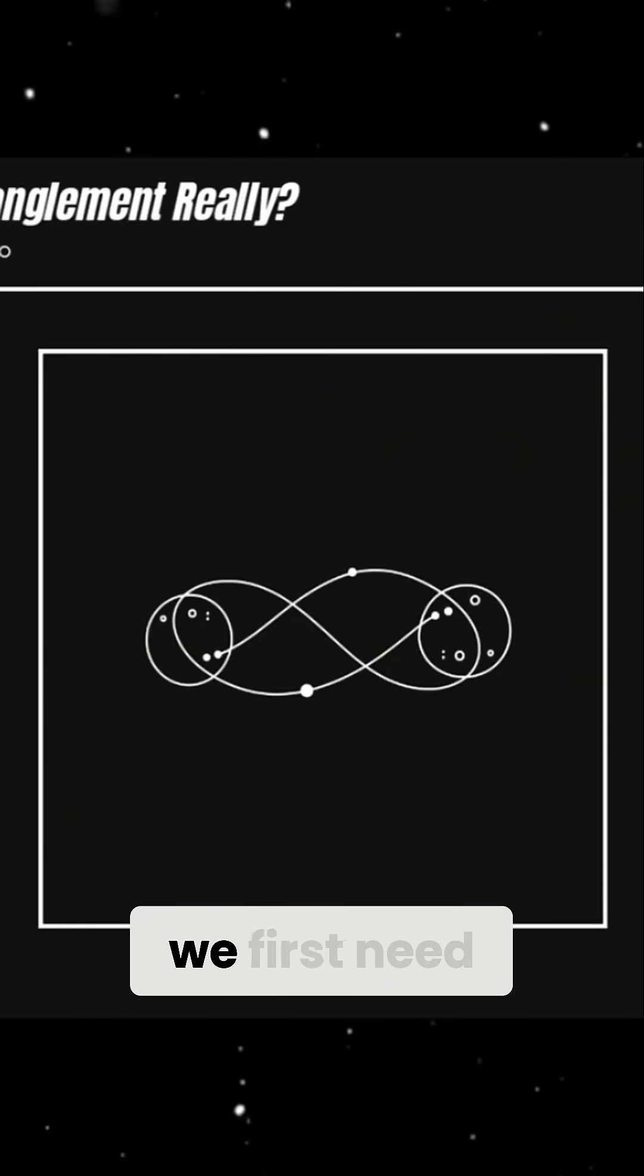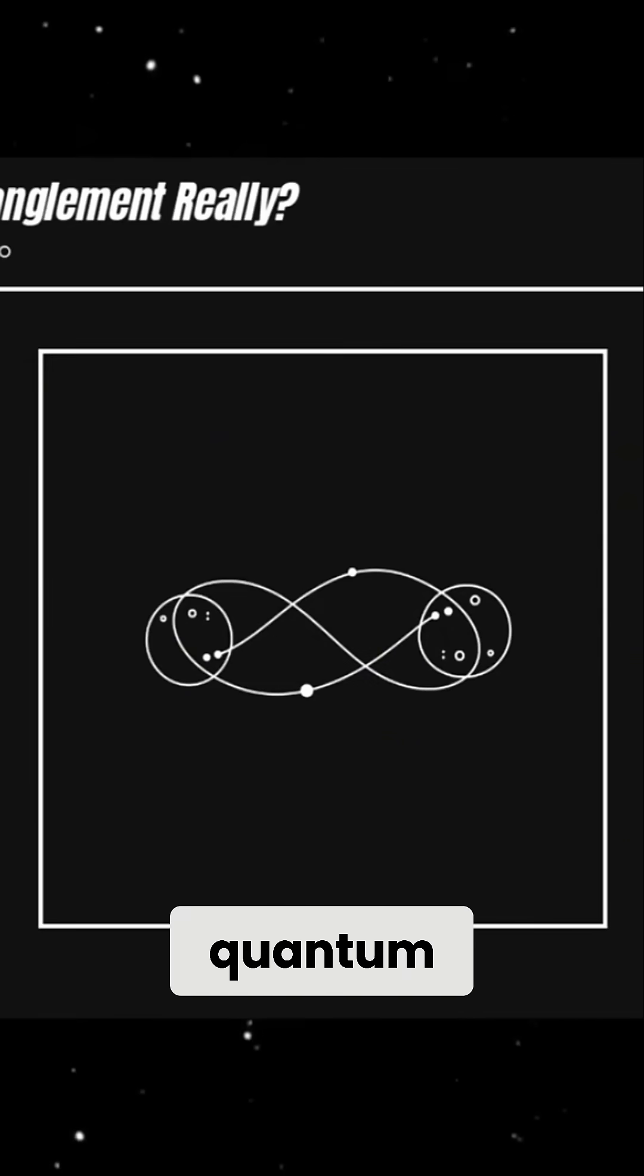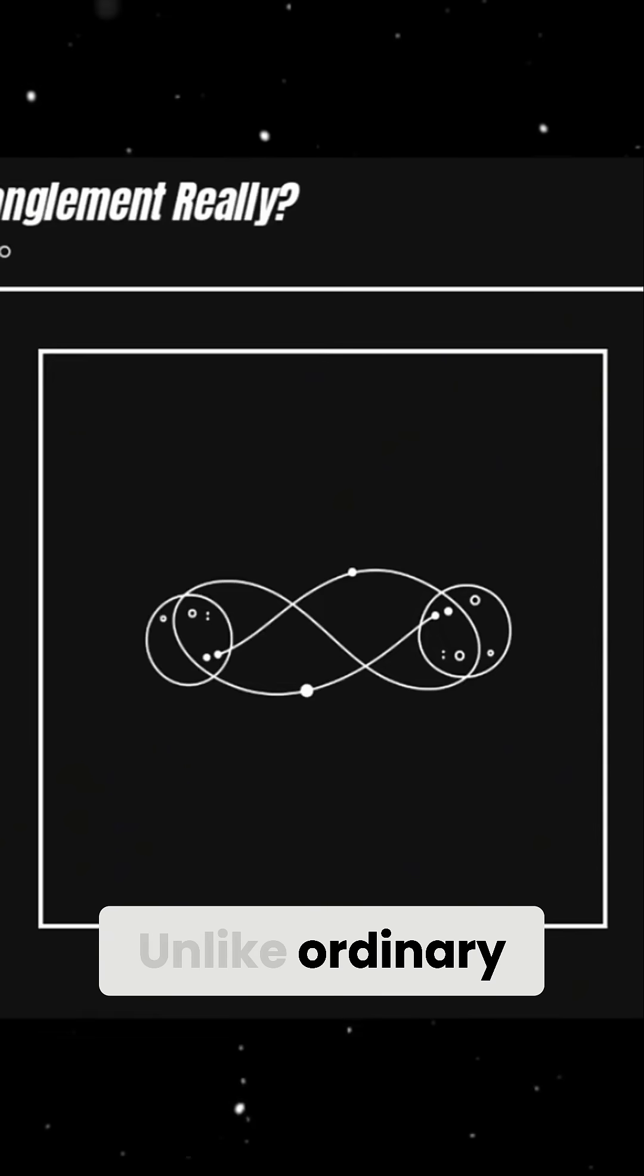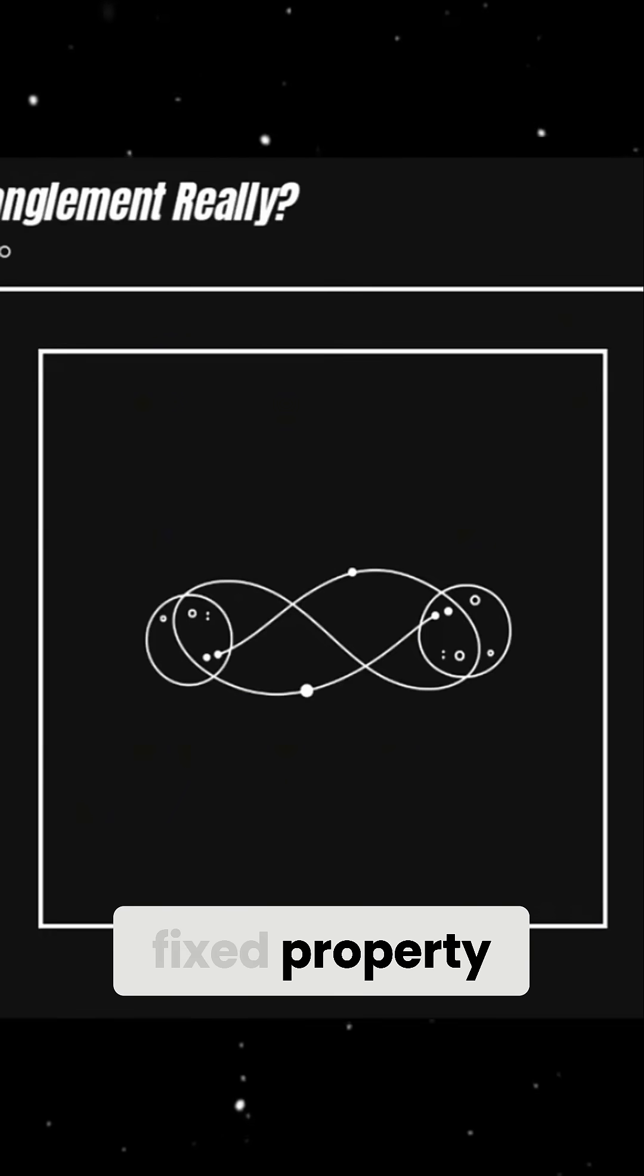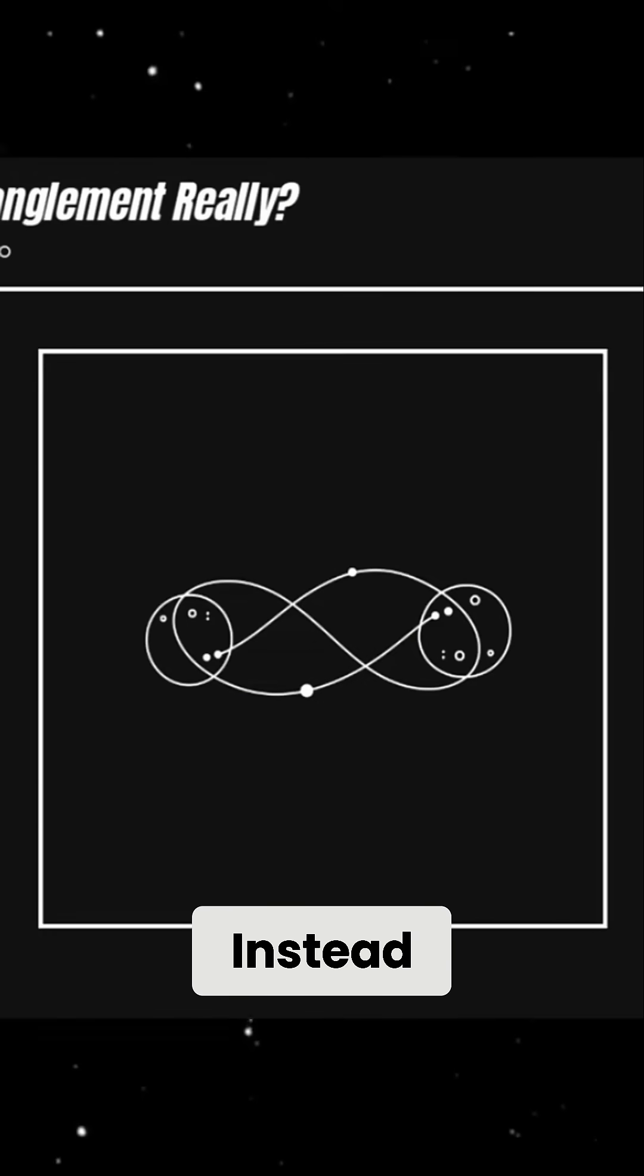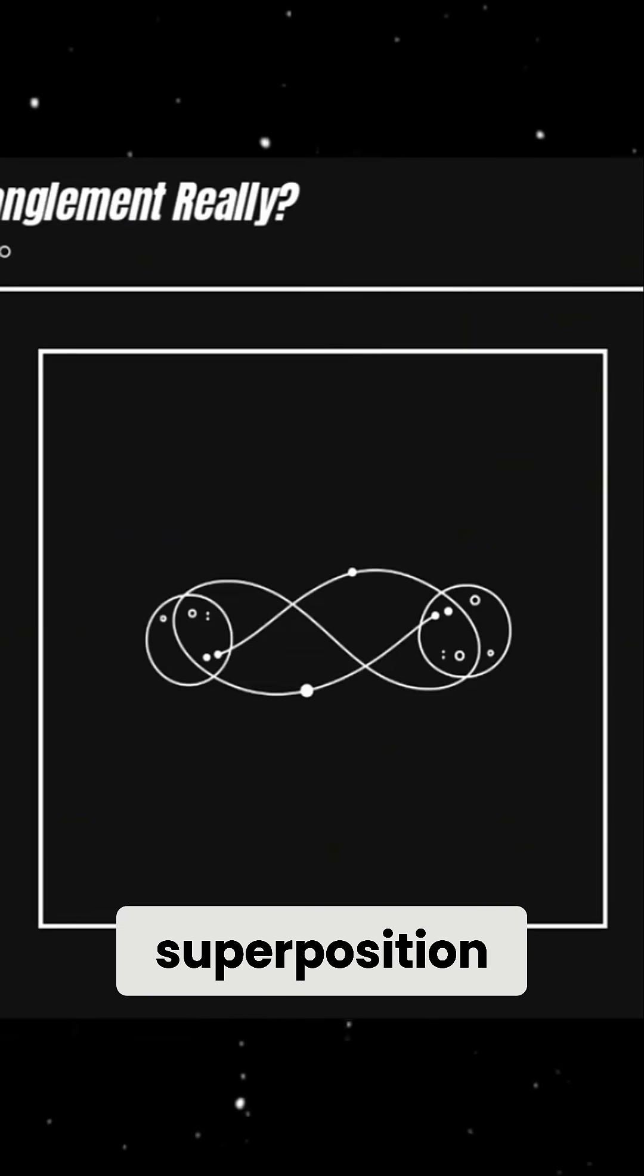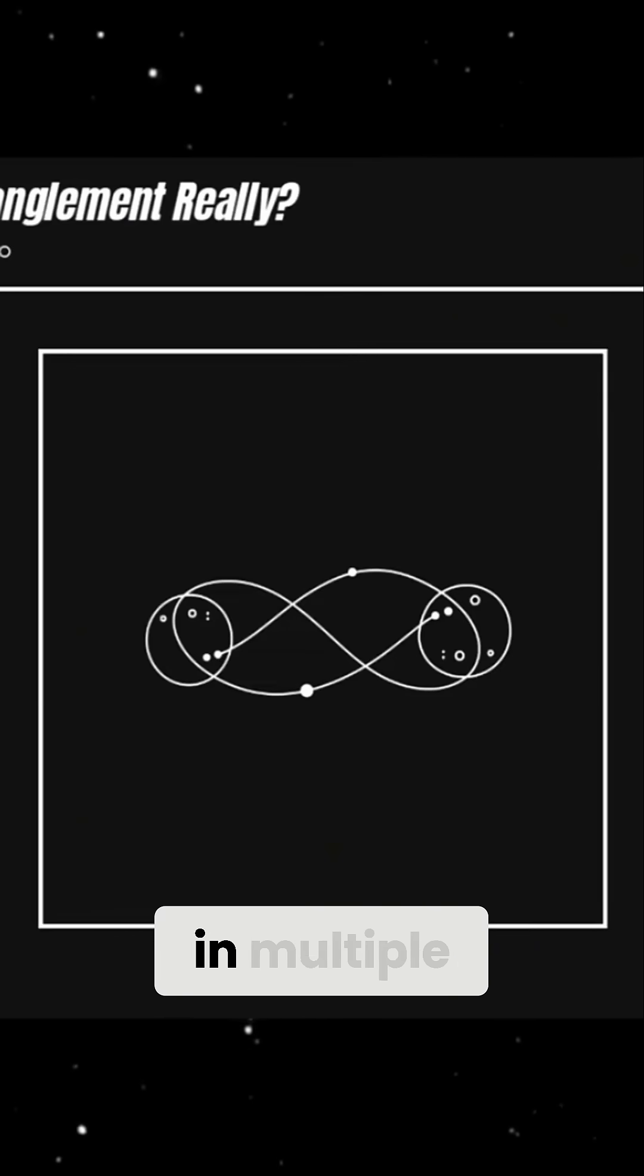To understand entanglement, we first need to look at the weird rules of quantum mechanics. Unlike ordinary objects, which exist in definite states, quantum particles like electrons and photons don't have a single fixed property until they are measured. Instead, they exist in a state called superposition, meaning they can be in multiple possible states at once.